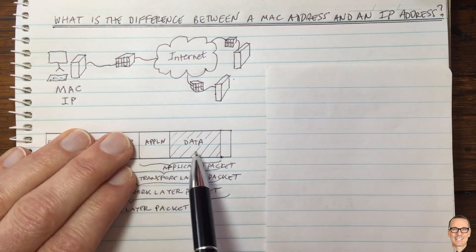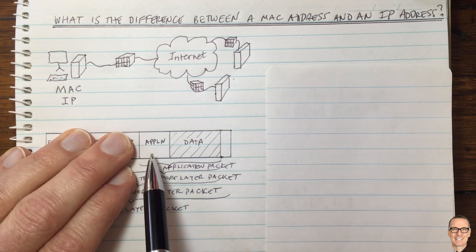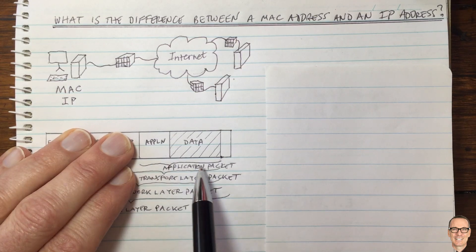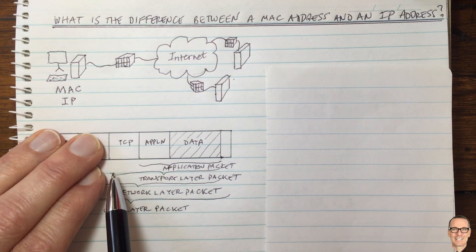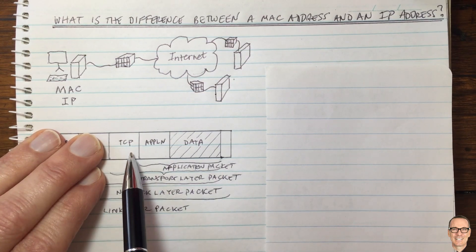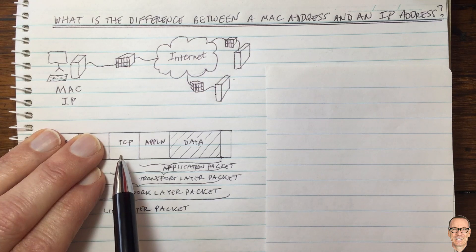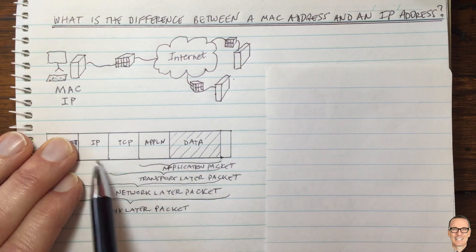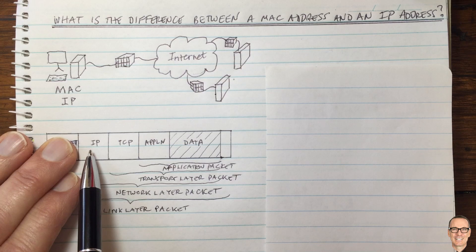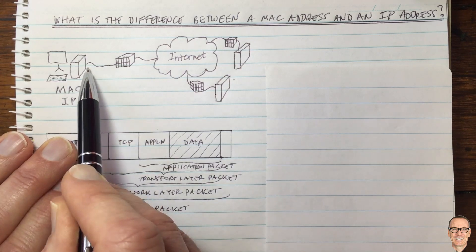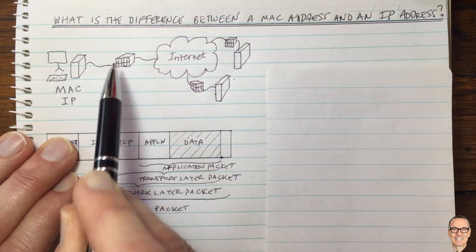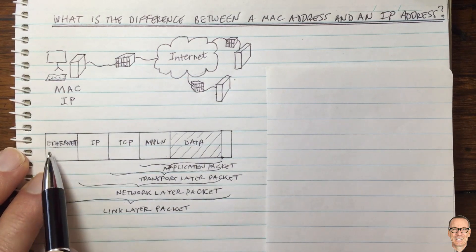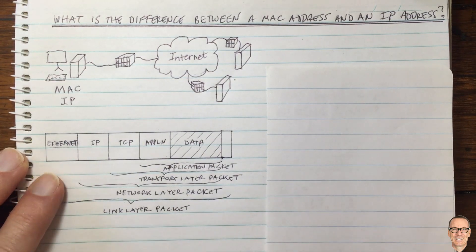For a video stream, the data gets a header containing information such as the frame rate of the video. That creates the application packet, which gets encapsulated inside a transport layer packet with a TCP header for an internet packet. That then gets encapsulated inside a network layer packet with an IP header. And for the link from the computer to the router or switch, it's encapsulated inside an Ethernet packet with an Ethernet header.